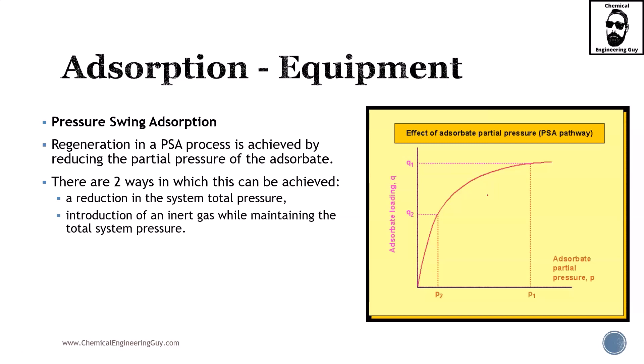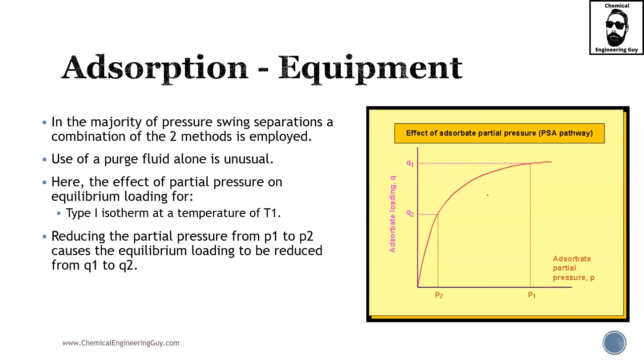There are two ways in which this can be achieved, either a reduction in the system total pressure, or you can add inert gas so the partial pressure changes. In the majority of pressure swing separations, a combination of these two methods is going to be employed. Either we change the pressure of the system or we change the partial pressure by addition of an inert gas. Use of a purge fluid alone is not likely to occur, but it still can happen. This will be mostly favored when you're working with inert gas and then you want to decrease the pressure so you let the purge gas go away.